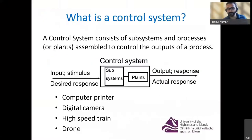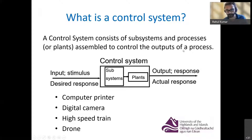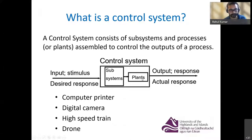So basically, what is a controller or what is a control system? A control system consists of subsystems and processes or plants which are assembled together to control the output of a process. In a control system, you may have several subsystems, and along with that, you can have a plant, or these subsystems together can produce or process some output.